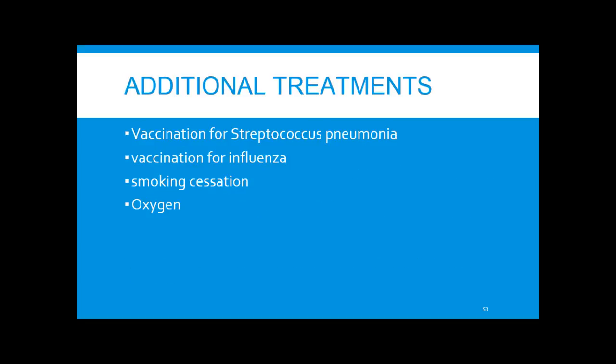Additional treatments every patient with chronic respiratory illness should have include vaccination for Streptococcus pneumoniae, vaccination for influenza, smoking cessation, and oxygen if appropriate.